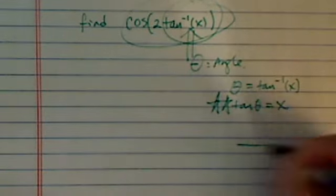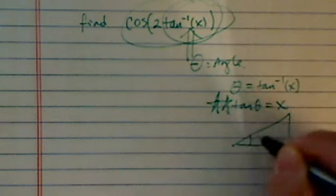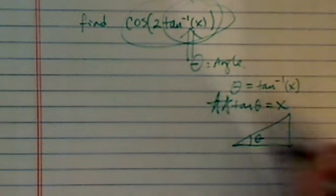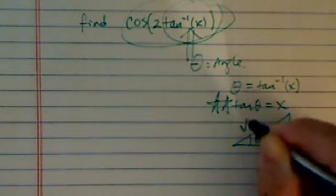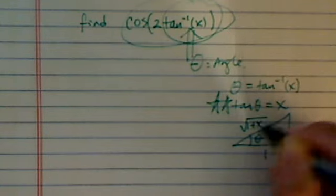Once you write it into this form, you can actually write it out. This is x, this is 1, so this is radical of 1 plus x squared.